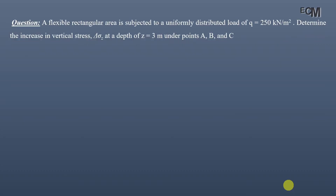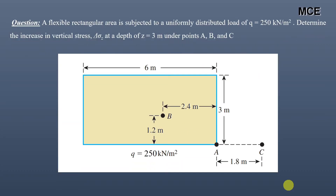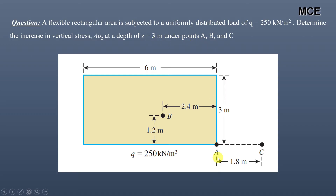Hello and welcome back to Master Civil Engineering. In this video, you will learn how to find the stress increase below a uniformly loaded rectangular area. A flexible rectangular area is subjected to a uniformly distributed load of 250 kilopascal. We have to determine the increase in vertical stress at a depth of z = 3 meters under three points: point A, point B, and point C.